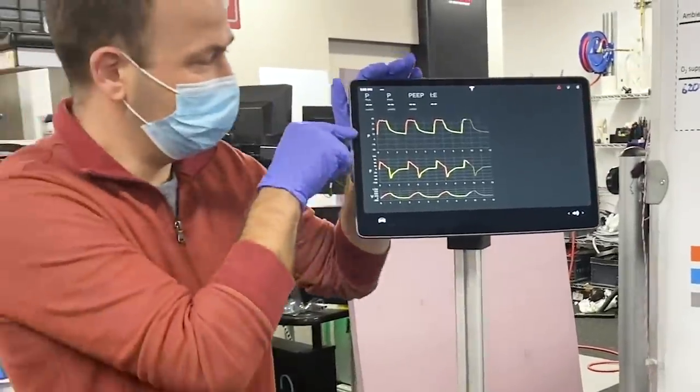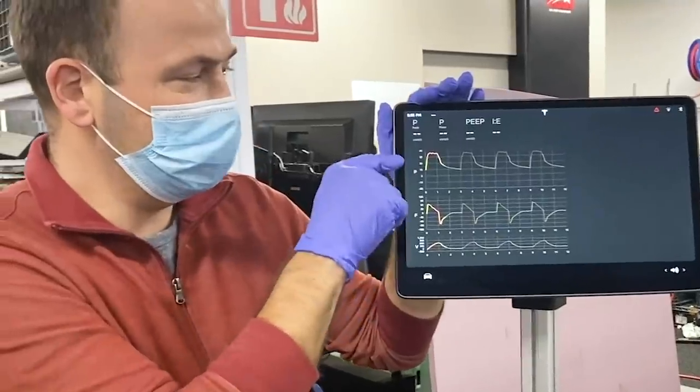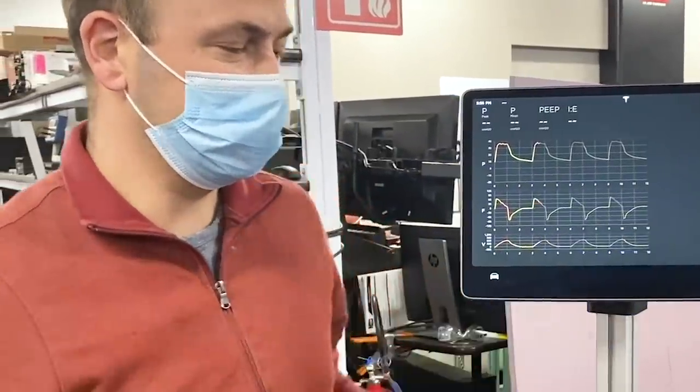That breath is actually being plotted out up here. We have three plots for pressure, flow, and volume. And you can see the line moving across as the lung is breathing.